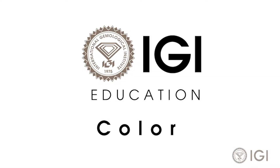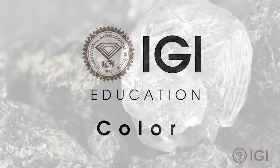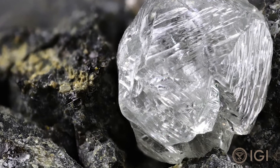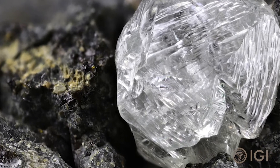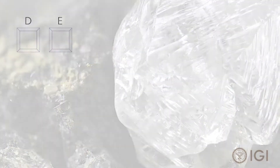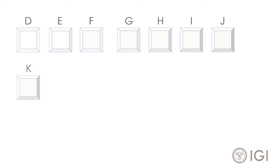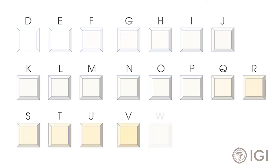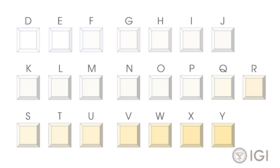A diamond's color is caused by chemicals in the earth where the diamond formed. The most common color is yellow. In fact, most diamonds are graded on a scale ranging from D, which has the least color, all the way to Z, which is light yellow or possibly light brown.